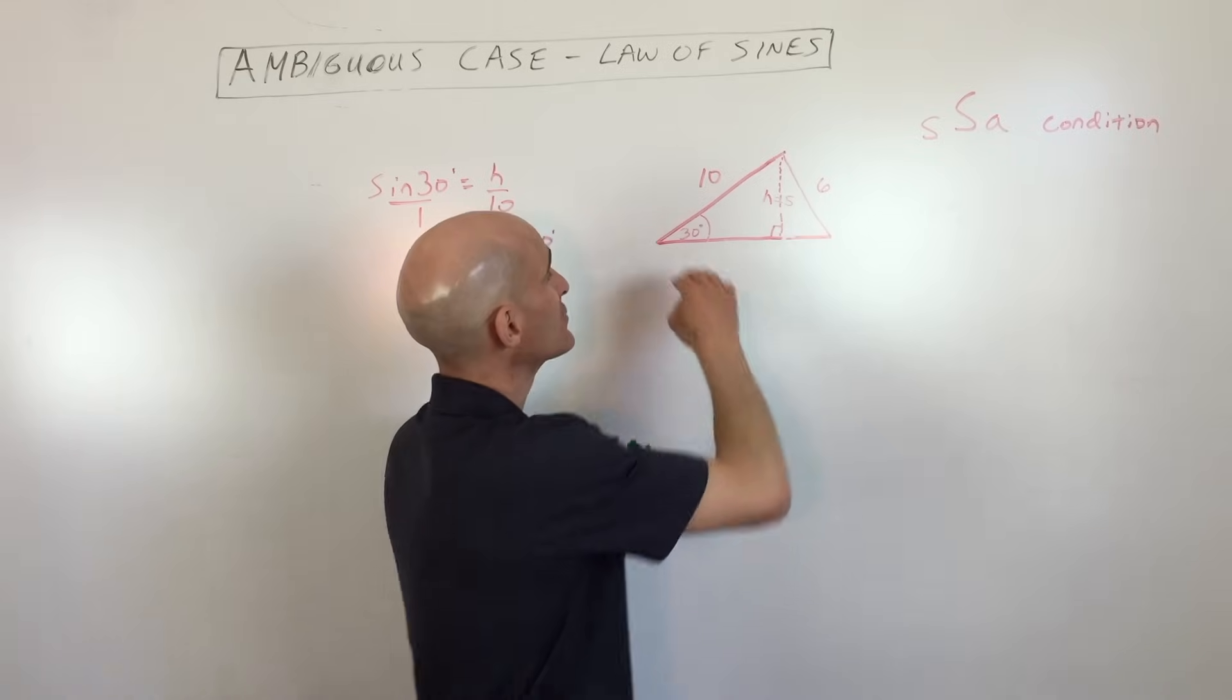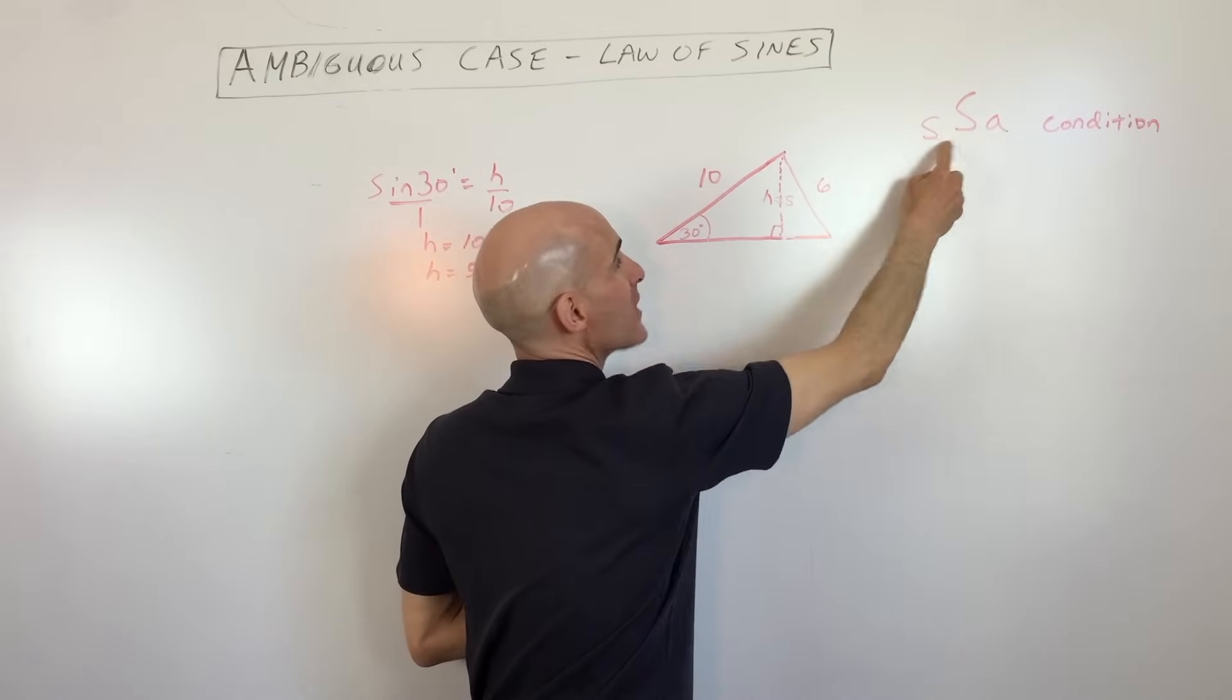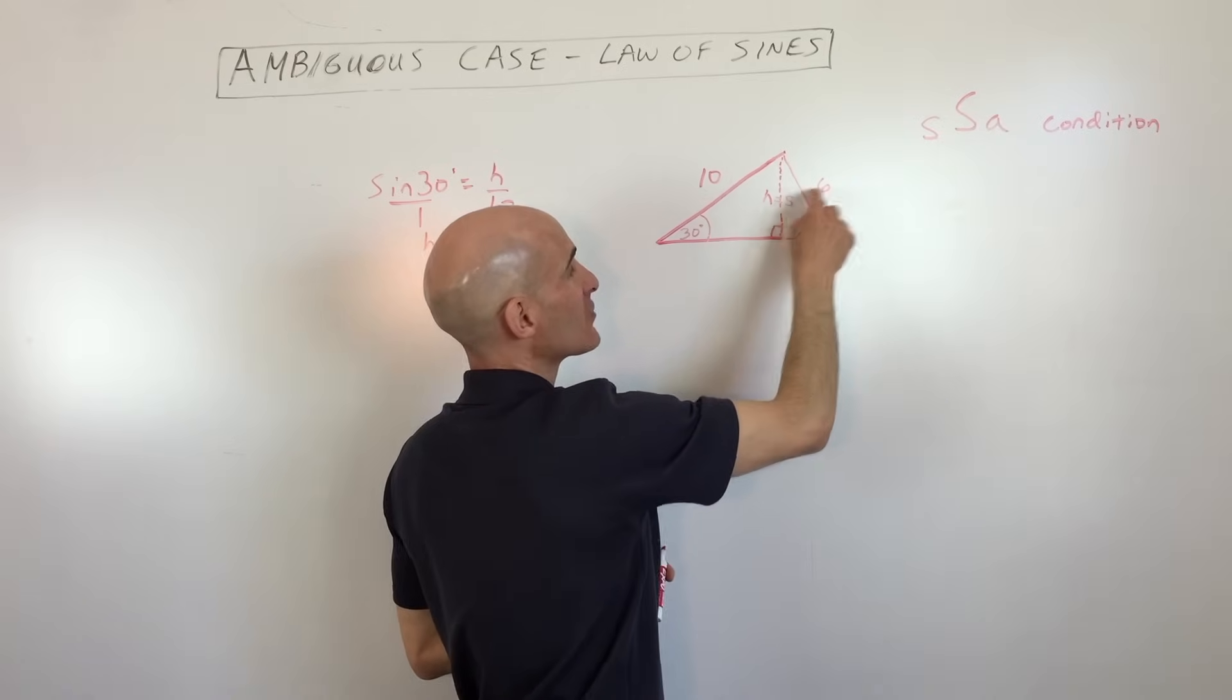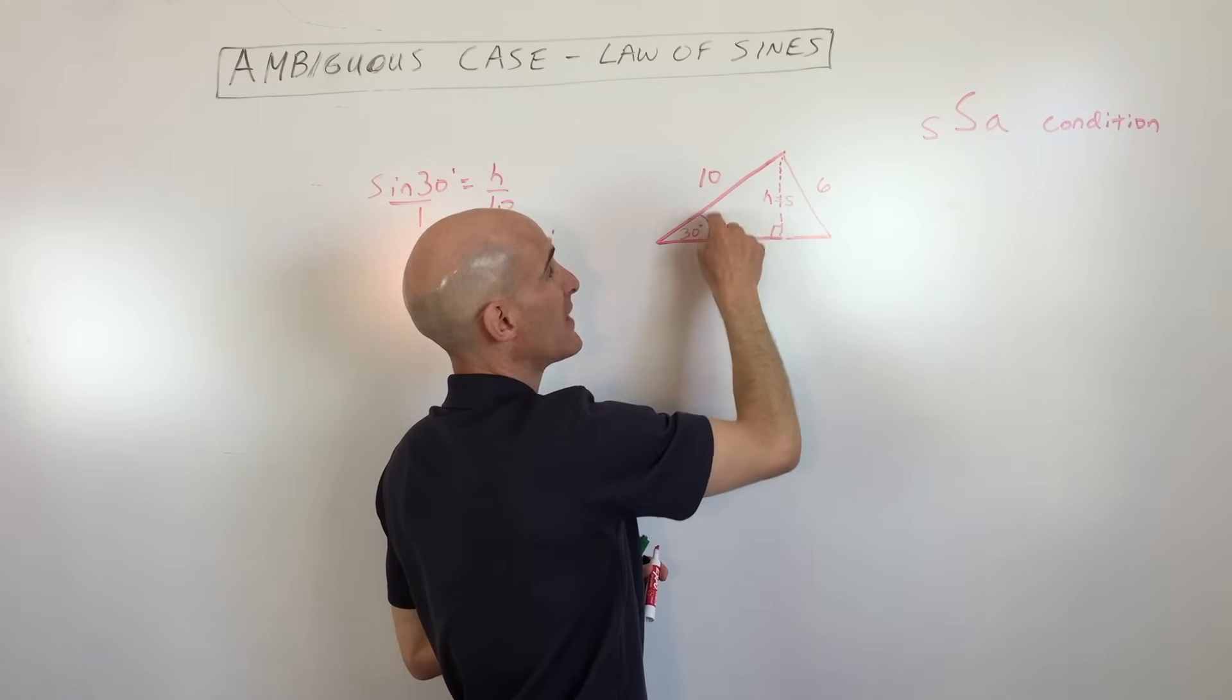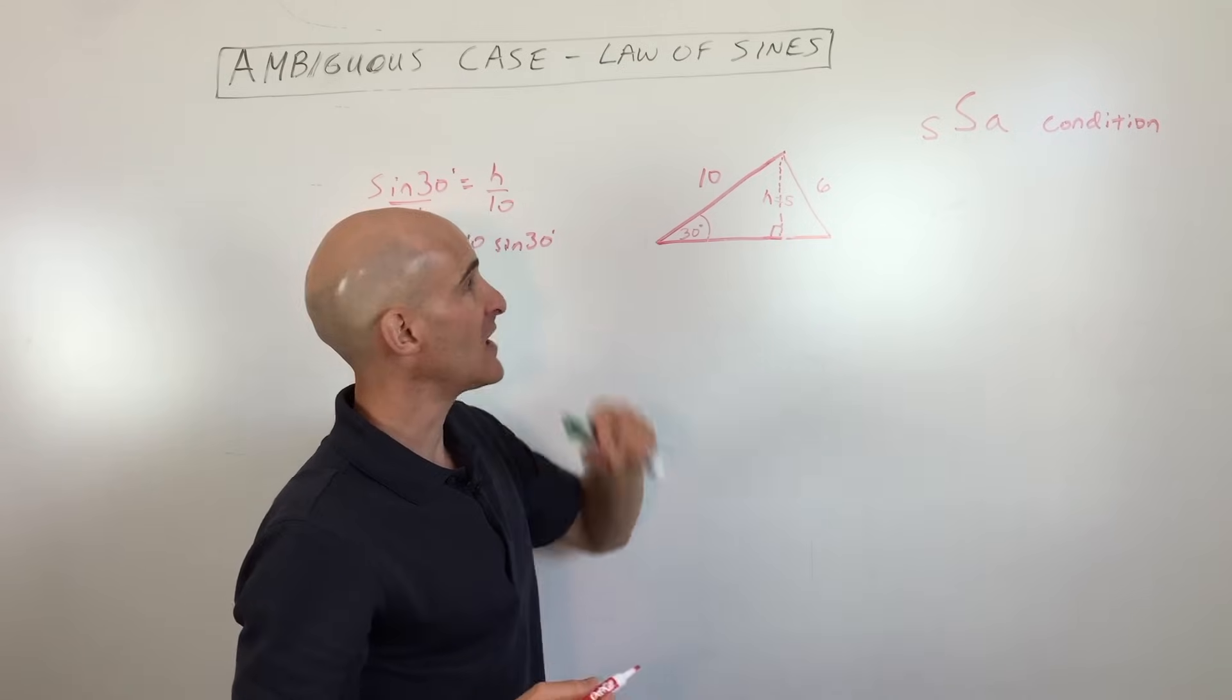And the side that's adjacent or next to that acute angle, see how I did a capital letter? So that's longer, that represents longer than the side that's across from, across from that acute angle. See how this is shorter, the one next to it is longer? That's what's called the side-side angle condition, the ambiguous case.